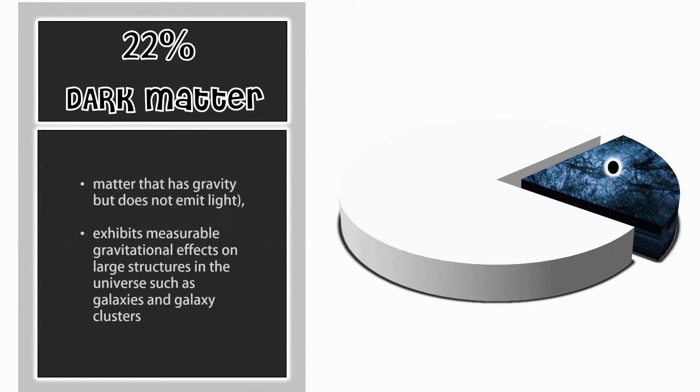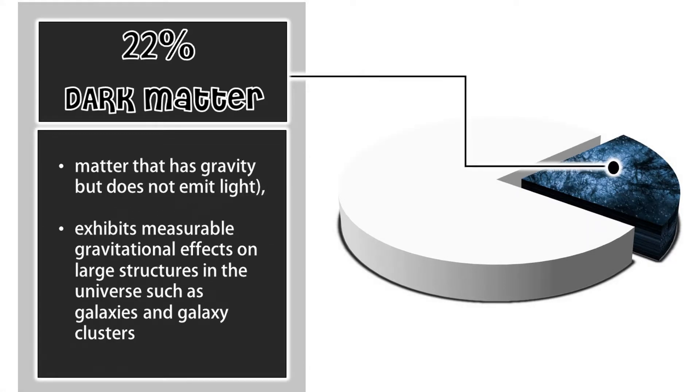Dark matter is invisible. It doesn't emit, reflect, or absorb light or any type of electromagnetic radiation such as X-rays or radio waves. Thus, dark matter is undetectable directly.